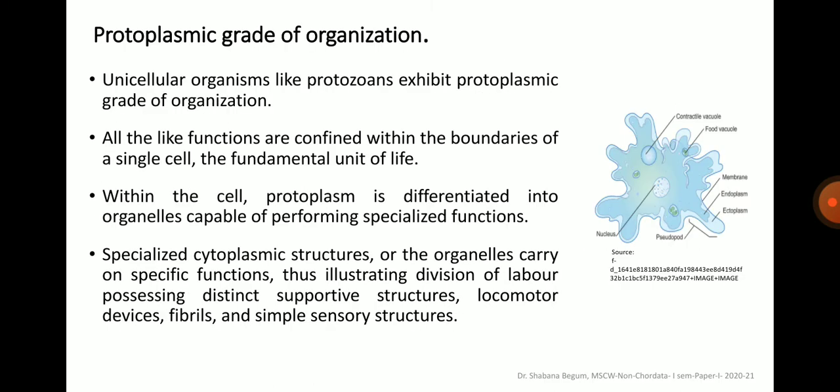Firstly, what is protoplasmic grade of organization? Protozoans are the unicellular simplest organisms which exhibit protoplasmic grade of organization. Protoplasm is the living content of a cell comprising the cytoplasm and a nucleus. All the functions are confined within the boundaries of a single cell, the fundamental unit of life. Within the cell, protoplasm is differentiated into organelles, which are capable of performing specialized functions.